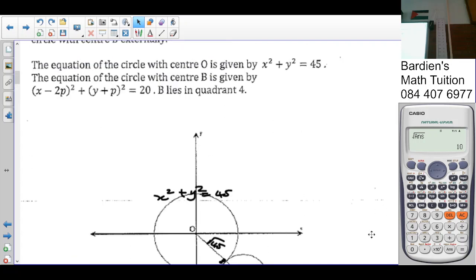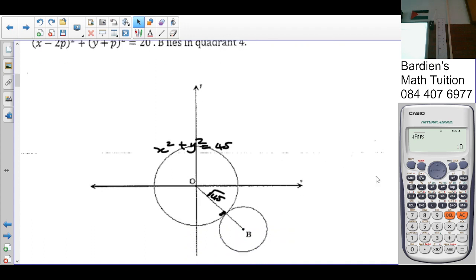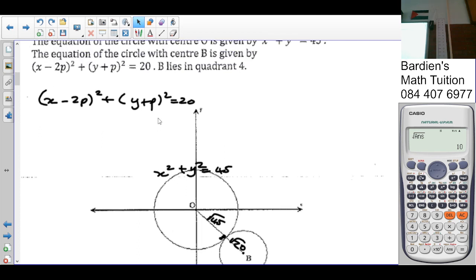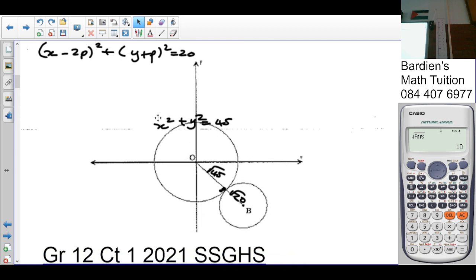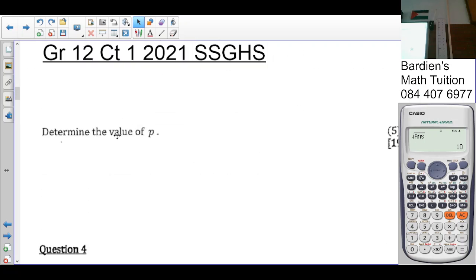Then we are told that the equation of circle center B is given by x minus 2p all squared plus y plus p squared is equal to 20. Which means to say from the point of contact to B, it's going to be the root of 20 or 2 root 5. And B lies in the fourth quadrant. So if B is in the fourth quadrant, meaning to say that x has to be positive, while the y is negative.